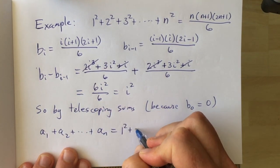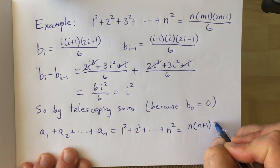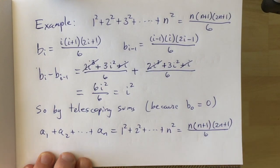And we can conclude by telescoping sums that the sum of the first n squares is n times n plus 1 times 2n plus 1 over 6.